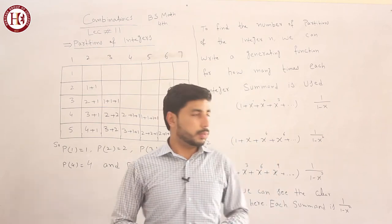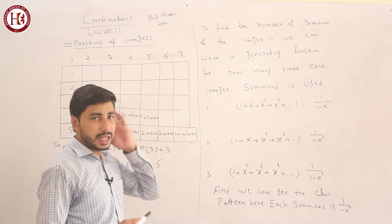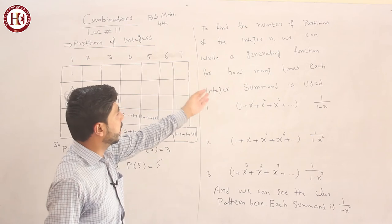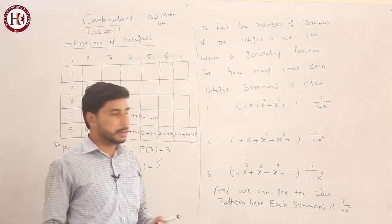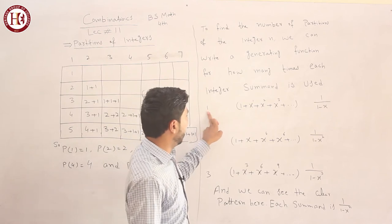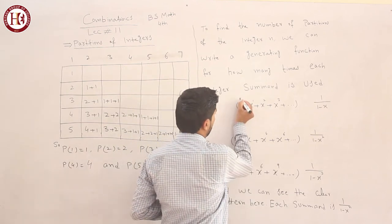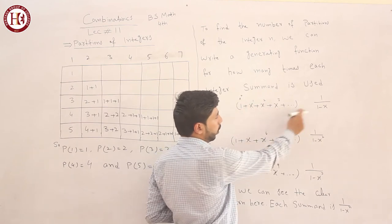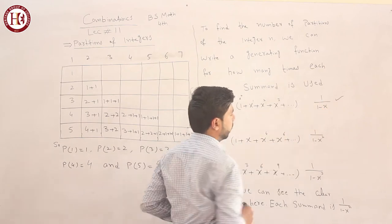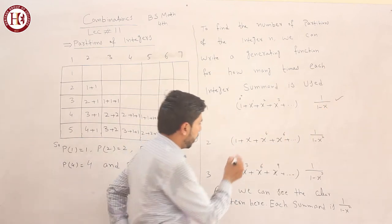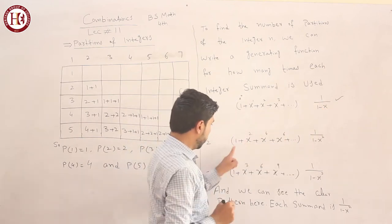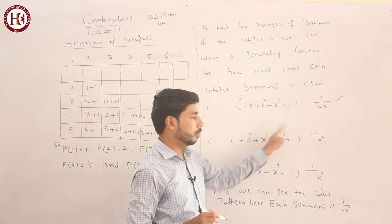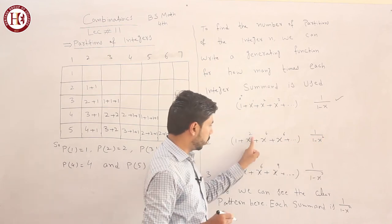So how can you use this to find the number of partitions of an integer? We can write a generating function. If this is for 1, you can write it like x^0 plus x^1 plus x^2 plus x^3 up to infinity. This equals 1 over (1 minus x). After that, for 2, we have x^2, x^4, x^6 - the multiples of 2.